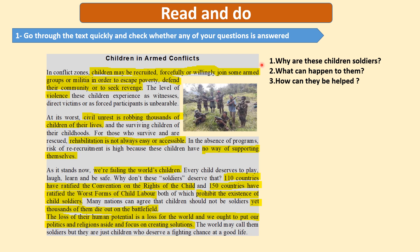Why are these children soldiers? There is an answer in paragraph number one: in order to escape poverty, defend their community, or seek revenge. What can happen to them? Experiencing violence, robbing thousands of children of their lives; rehabilitation is not always easy or accessible for most of them. They are left without support, failing the world's children, and thousands of them die out on the battlefield. Question three — how can they be helped? — is not clearly answered in the text, but it was just a guide to help you read the text purposefully.